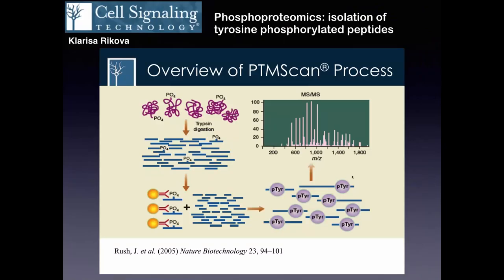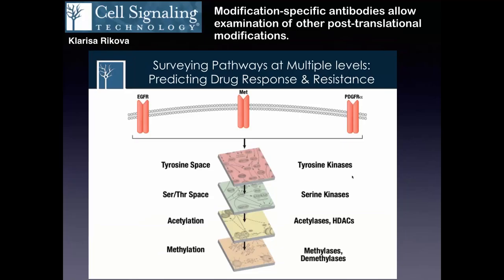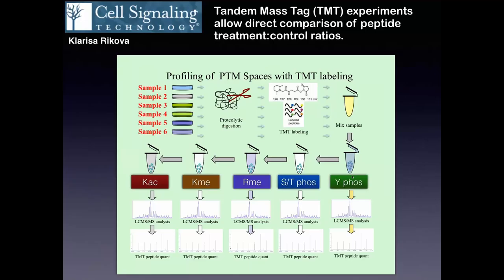The ability to pull down phosphotyrosine from peptides launched the field called phosphoproteomics. Cell Signaling Technology has developed some really good antibodies for phosphoproteomics, and I've used these in a previous study with neuroblastoma cell lines. Since that time they have other modification-specific antibodies, so they can sample serine phosphorylation, acetylation, and methylation. Clarissa did an experiment called tandem mass tag, where they compare in a six-plex experiment samples to a control sample. There are two sets of experiments: lung cancer cell lines compared to normal tissue, and lung cancer cell lines treated with drugs over a time course.